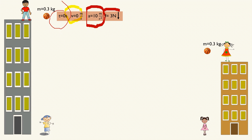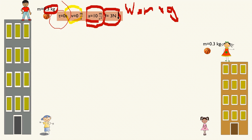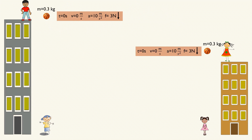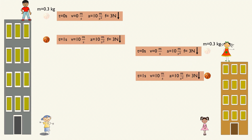The weight is 3 newtons — calculated as weight equals mass times g, where g is 10. If mass is 0.3 kg, then 0.3 times 10 gives 3 newtons. So at time zero each ball has an initial velocity of zero, an acceleration of 10 m/s², and a gravitational force of 3 newtons. Both balls have identical conditions with the same mass and same weight.